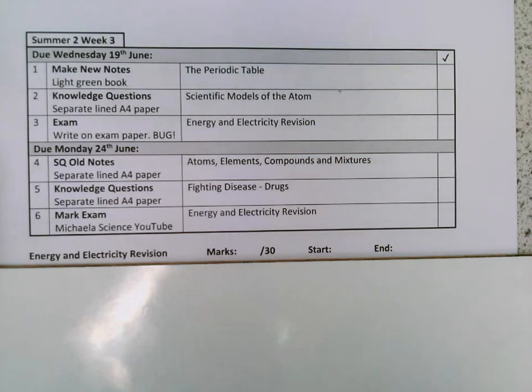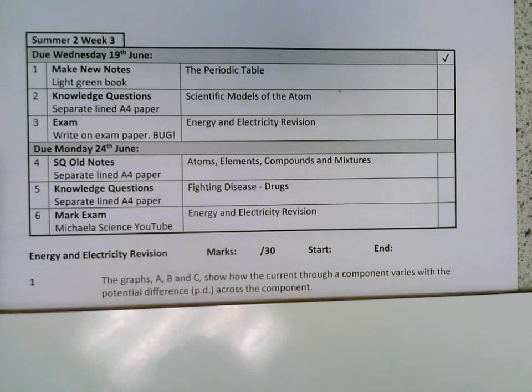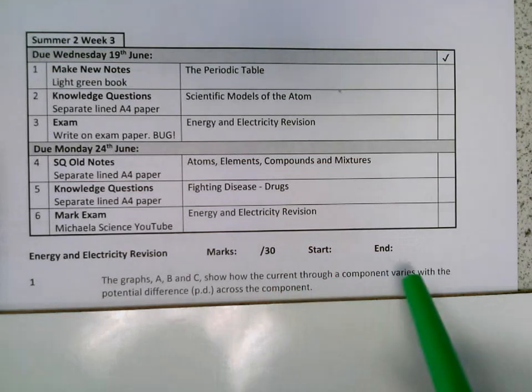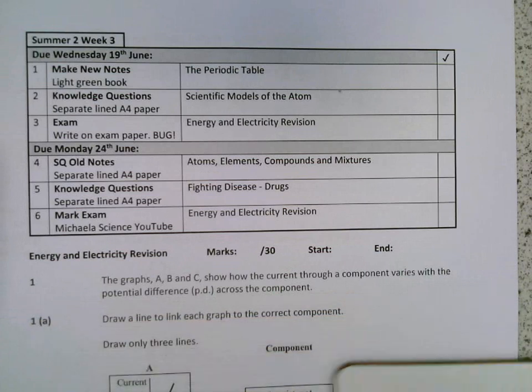Hello, everybody. I'm here to mark this week's exam with you, so let's get started. The first question is about some VI characteristic graphs. We've got three graphs, A, B, and C, and it shows how the current varies with the potential difference for each different component. So let's have a look at them.